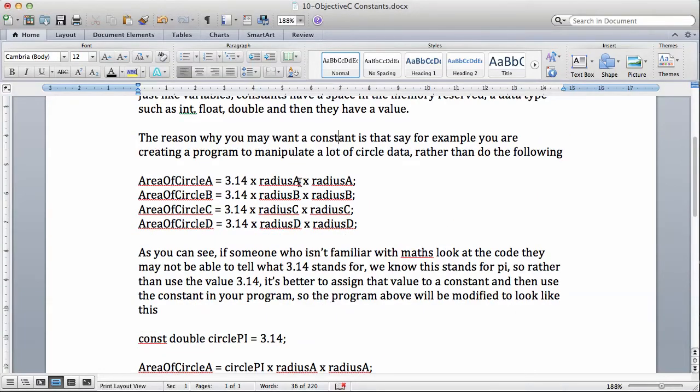If you have, for example, four different circles that you're trying to modify the data for, you're trying to calculate the area of the circle. You can always say 3.14, which is the value of pi, multiplied by radius, and then 3.14 again multiplied by radius for circle B, 3.14 multiplied by radius, and so on and so forth.